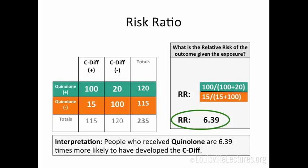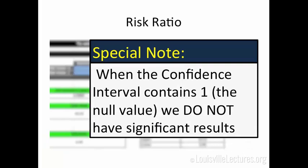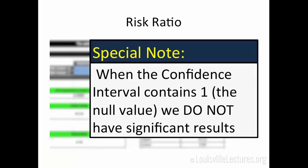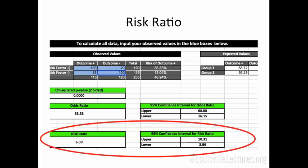Remember, these are incident cases. We have an Excel workbook available — email Kim and she'll send it to you. If you plug the numbers into the relevant tab, you'll get this output. With risk ratios and odds ratios, you get confidence intervals. A special note: if the confidence interval contains 1, then we don't have significant results. For example, if our risk ratio is 11.15 but our confidence interval contains 1, we don't have significant results. So you'll see that 1 is literally not in that margin for our example.